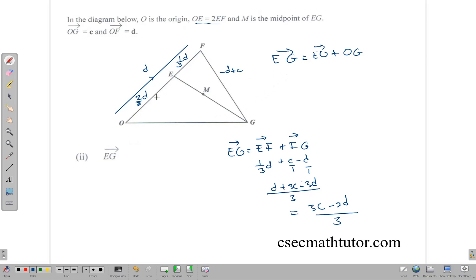So EG is equal to EF plus FG. So here we have 1 third D, that's EF, plus C minus D. Now we can put these over 1 and have them in fraction form. So we multiply, have a LCM of 3, so this gives us D plus 3C minus 3D, and there we have minus 3D plus D is minus 2D, so our answer here becomes 3C minus 2D all over 3.